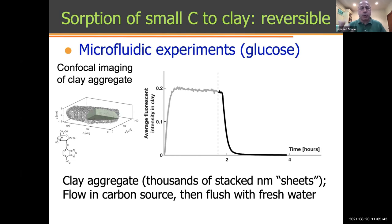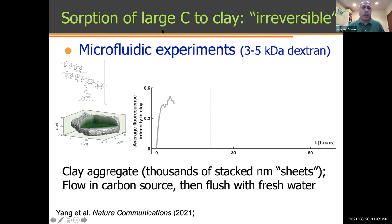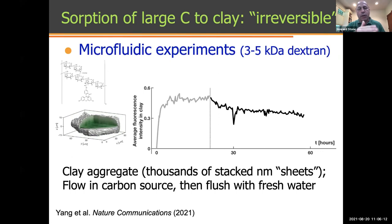Within a couple hours there's an absorption and desorption process, and you'd refer to this as a reversible process involving carbon and soil. If you use a higher molecular weight molecule — in this case a dextran molecule with on the order of a few thousand Dalton molecular weight — what you see is that after the flooding experiment, carbon gets absorbed into the clay particles that form these soil aggregates. But if you try to flush it with water, only a little of the carbon comes out and the majority of the carbon remains trapped in the soil particle. We refer to this, at least on timescales of several days, as an irreversible adsorption process.